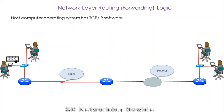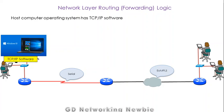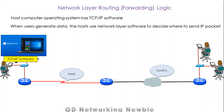Every computer that is part of the network has an operating system, and in that operating system we have TCP/IP software. When a user generates data, that data is handed over to the transport layer, and the transport layer hands it over to the network layer. The network layer — which is part of the software — decides where to send that IP packet. The network layer is going to decide where to send those packets.